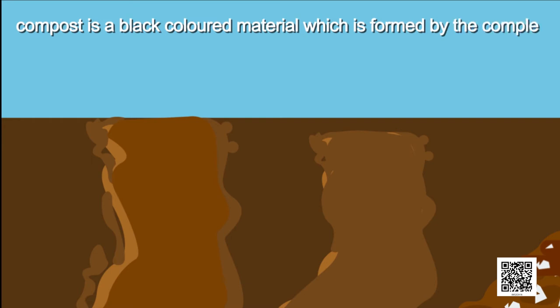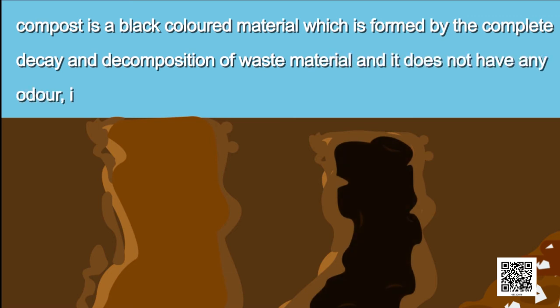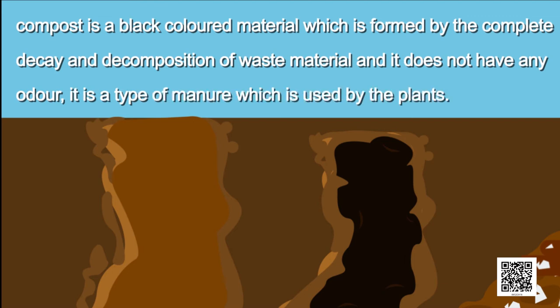Compost is a black-coloured material which is formed by the complete decay and decomposition of waste material, and it does not have any odour. It is a type of manure which is used by the plants. The rotting and conversion of some materials into manure is called composting.